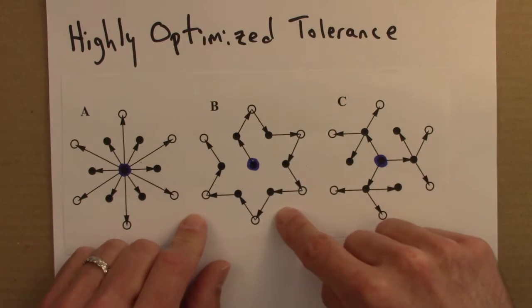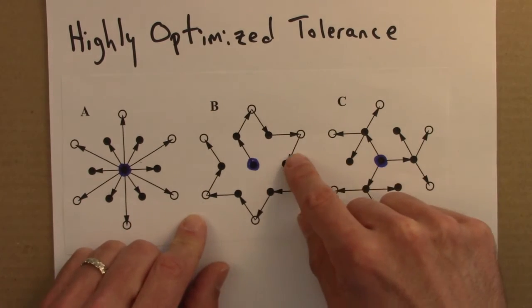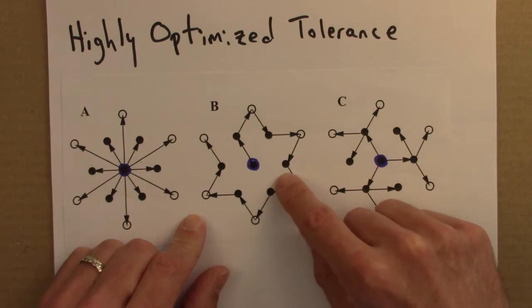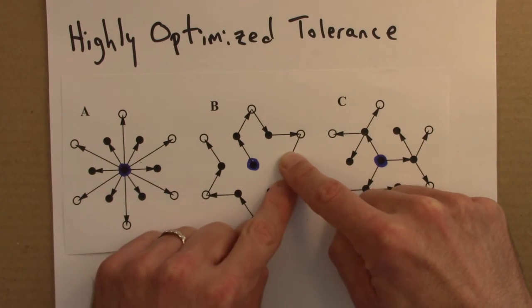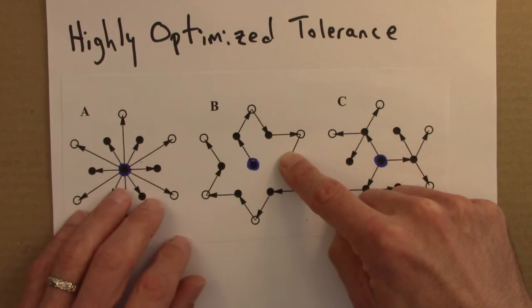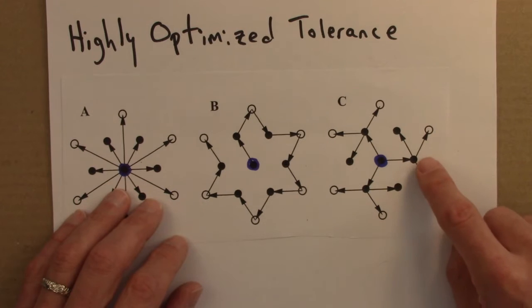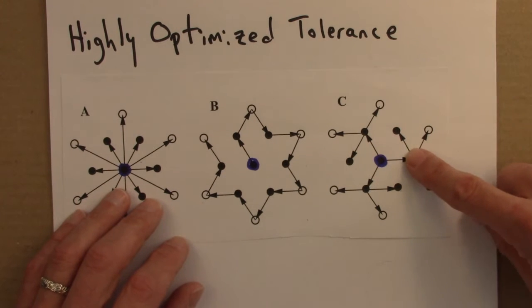In this setup if one of these links gets broken at random that's bad news because everything downstream from it now doesn't get that resource, water or the train or whatever. Whereas here if there's a random failure, that's still a bummer, random failure is never good,